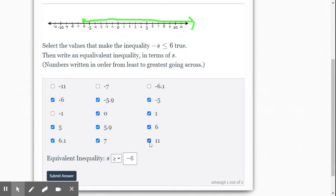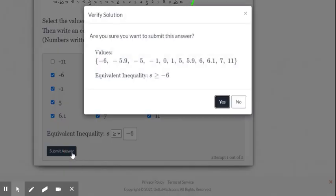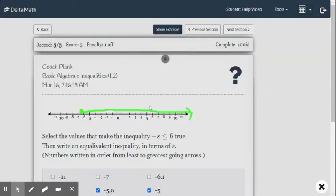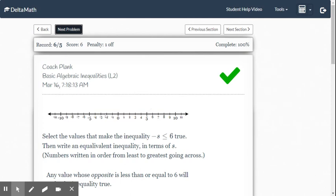Again, Delta Math sets this up going from the smallest number to the largest number, so it's really easy once you find the dividing point how to pick the other numbers. Make sure we got it, submit the answer, yep, and boom we got it correct.